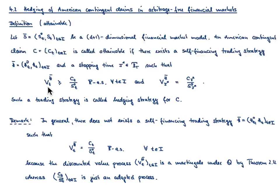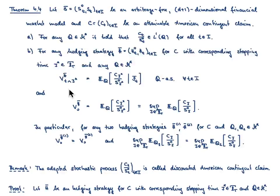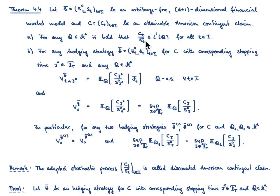Such a hedging strategy with that domination property is also sometimes called a super-hedging strategy. So let us now look at properties of the discounted value process for an attainable American contingent claim. I consider as usual a financial market model that is free of arbitrage, and I consider an attainable American contingent claim denoted by C. First of all, for any equivalent martingale measure, the discounted value process is integrable, meaning that C_t divided by S0_t is in L^1(Q) for any time point t in our index set.